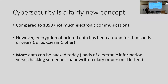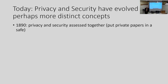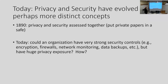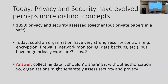Cybersecurity is a new concept compared to 1890, though encryption of printed data has been around for thousands of years — from the Julius Caesar cipher through World War II. But more data can be hacked today given the vast amount of electronic information and improving, cheaper storage — versus hacking someone's handwritten diary in 1890. Privacy and security have evolved into more distinct concepts. In 1890, you put private papers in a safe — analysis done. But today an organization could have very strong security: encryption, firewalls, network monitoring, data backups, intrusion detection, antivirus — but have huge privacy exposure by collecting data it shouldn't collect or sharing it without authorization with third parties.